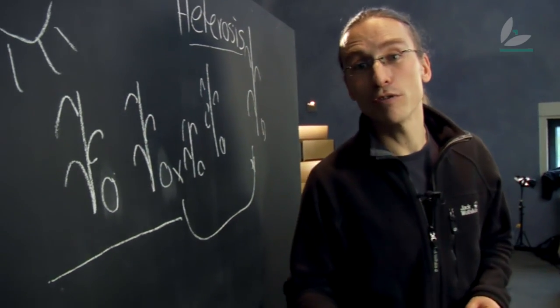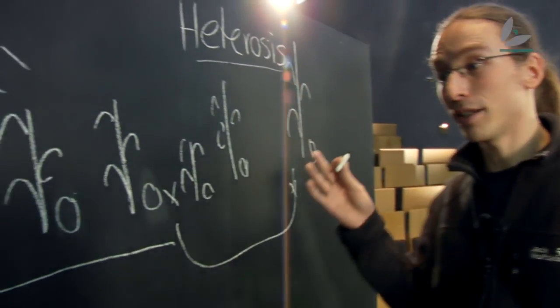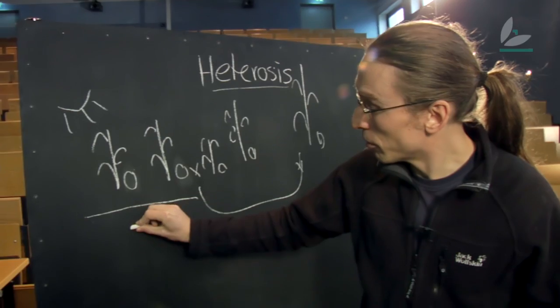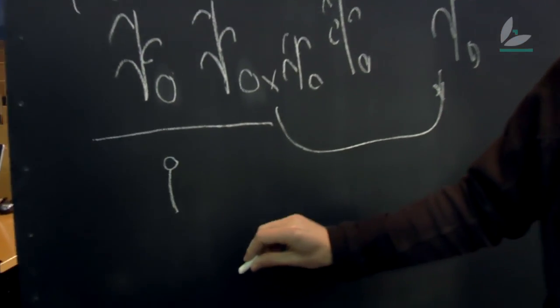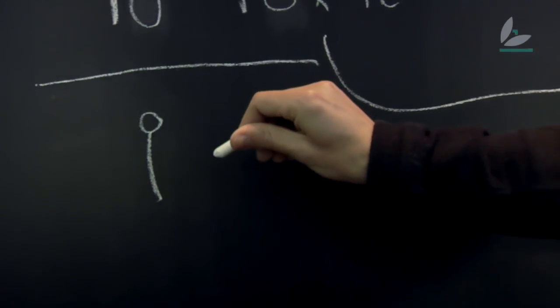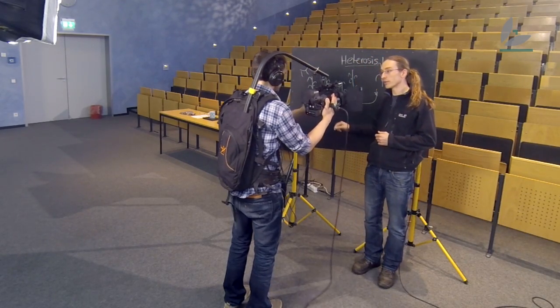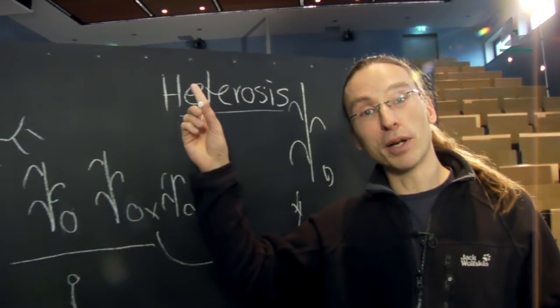Therefore, we try to follow a novel approach to predict heterosis. We grow the young seedlings of the parental lines and analyze the content of the roots. For that, we use a novel technology called metabolomics, which is explained to you in another video by Lothar Wilmitzer.